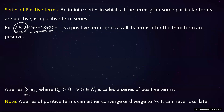So an infinite series in which all the terms after some particular term are positive — even though there are three negative terms here, after those three terms all the remaining terms are positive. In such a case we can call this a positive term series. Loosely speaking, we can say this is a positive series, but mathematically we define it as a series where each uₙ is greater than zero.